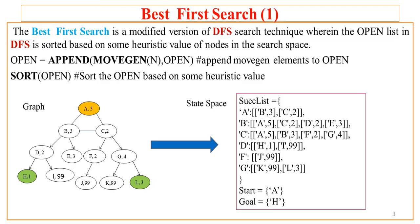Best first search is the modified version of DFS wherein the open list in DFS is sorted based on some heuristic value of the nodes in the search space. In case of DFS, the Mugen function generates the child nodes of N and these child nodes are added to the existing open, which is directly used. But in case of best first search, the open is sorted and then that sorted open list is used for further processing.